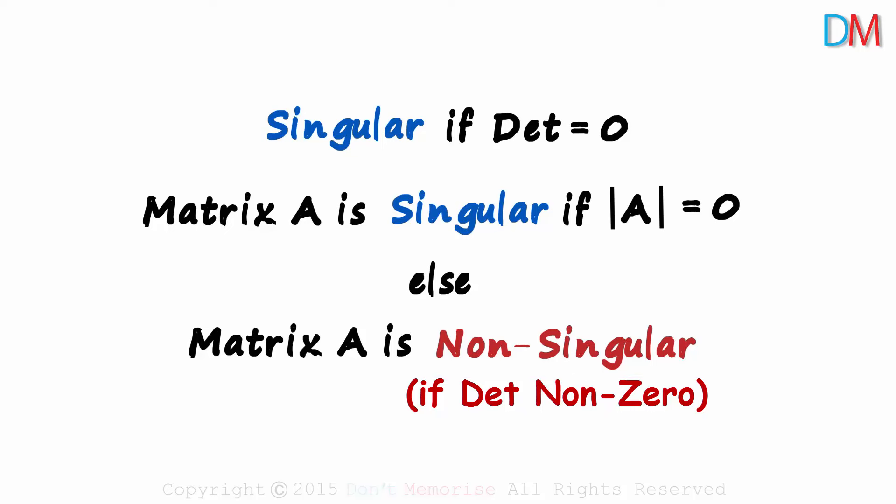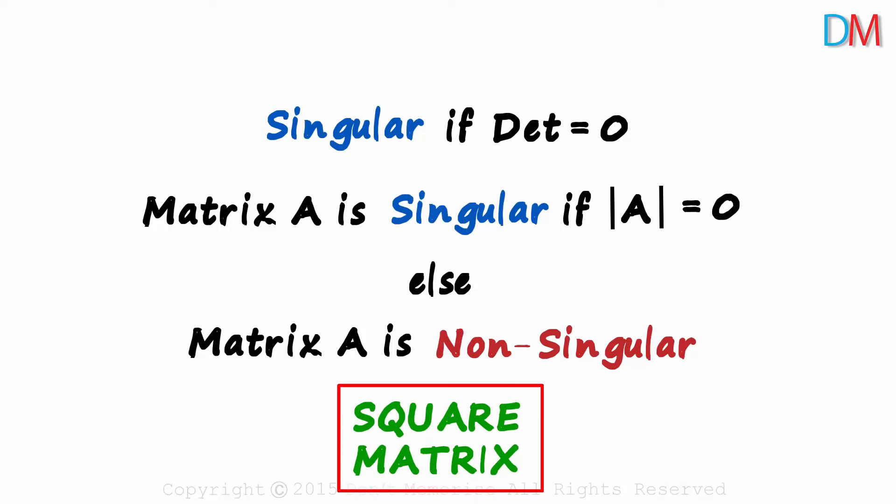Just remember this, non-zero, non-singular. And needless to say, we are only talking about square matrices here. Because only square matrices can have determinants. So we can say that a square matrix is singular if its determinant is zero and non-singular if its determinant is non-zero.